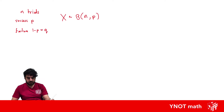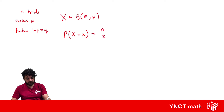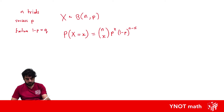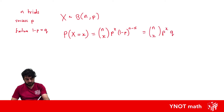The probability that X takes a certain value can be written as: P(X = x) = n choose x, multiplied by P to the x, multiplied by (1 minus P) to the power of (n minus x), which is actually a term in the binomial theorem. Or you could write this as n choose x times P to the x times Q to the (n minus x), where Q is equal to 1 minus P.